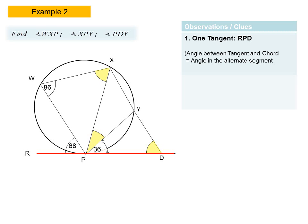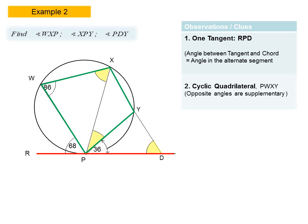Here we recognize that we have a tangent RPD, and the tangent is going to speak to our application of the theorem which says the angle between the tangent and the chord is equal to the angle in the alternate segment. We also recognize a cyclic quadrilateral, and the most practical application of this is that opposite angles are supplementary.